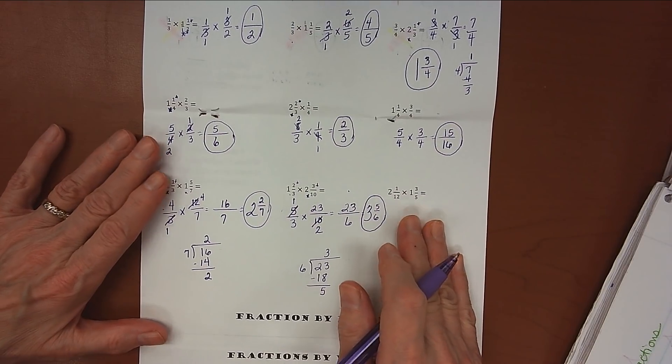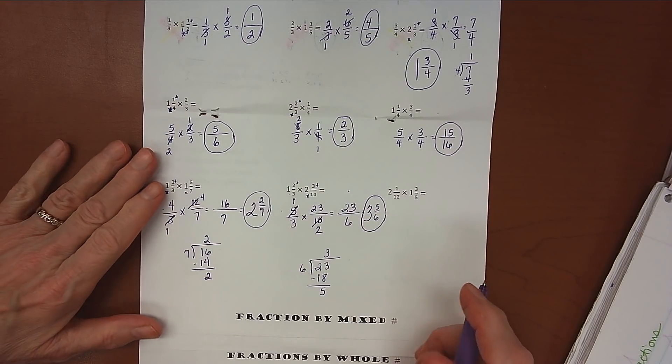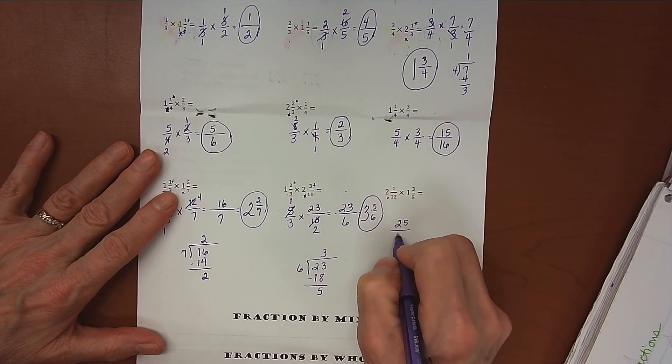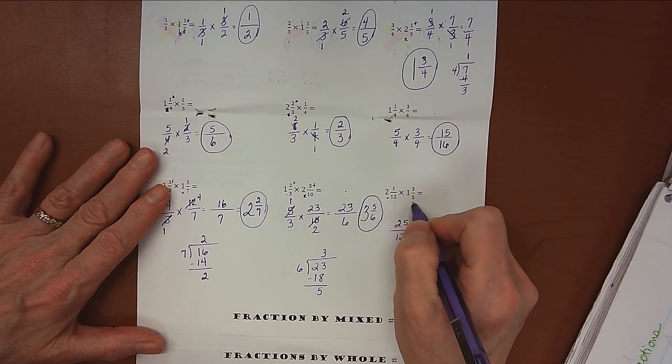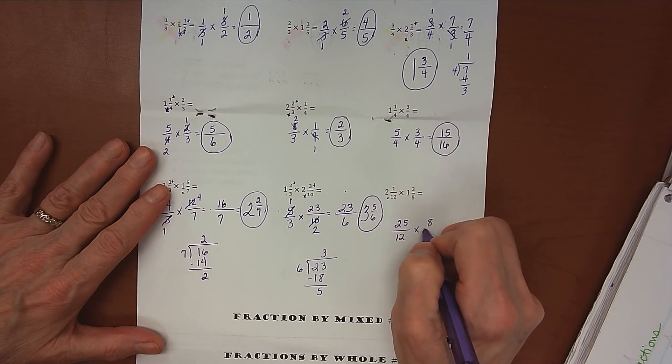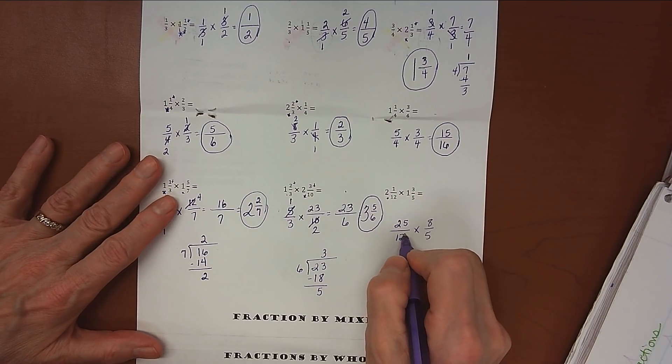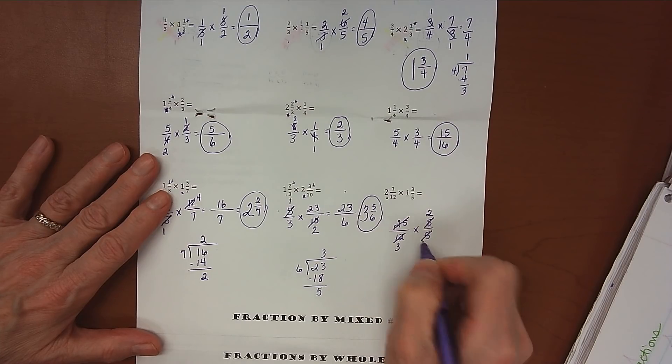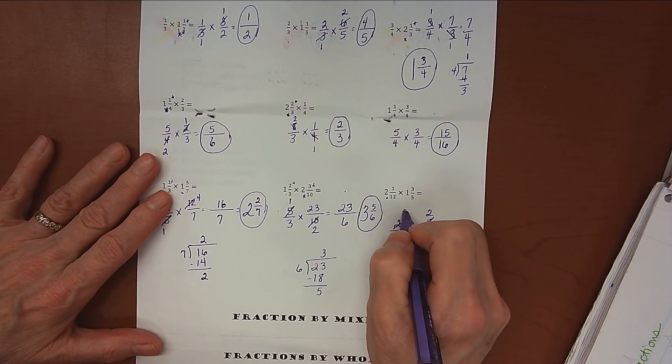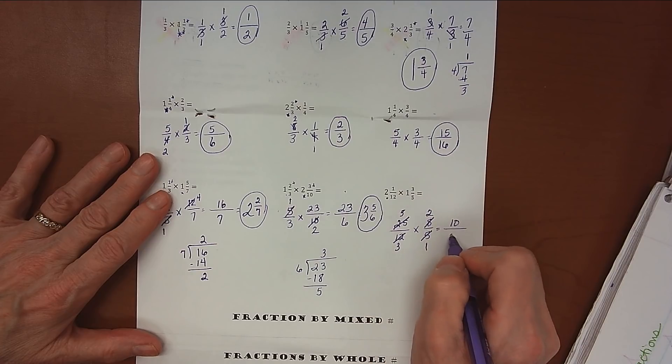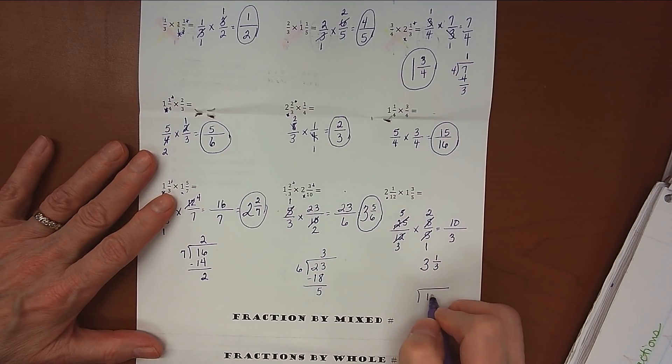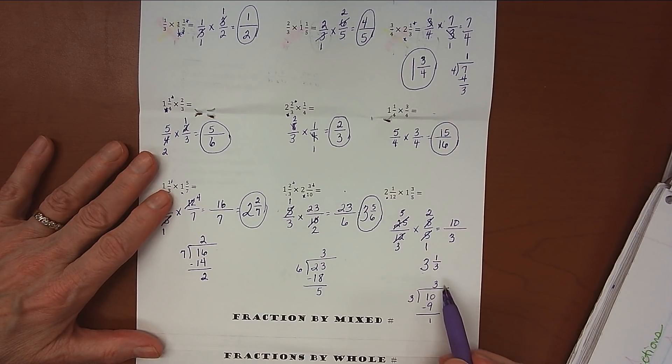Alright, why don't you try this very last one on your own? So stop your video, try this one, and then check back in and see how you did on that. Alright, so here we go. 12 times 2 is 24, plus 1 is 25 over 12. Did you change to the improper fraction correctly? 1 times 5 is 5, plus 3 is 8, 8/5. Places to cross-simplify. Both of these divide by 4, so 8 divided by 4 is 2, 12 divided by 4 is 3. Both of these divide by 5, so 5 divided by 5 is 1, 25 divided by 5 is 5. 5 times 2 is 10, 3 times 1 is 3. 3 divides into 10 three times with 1 left over. And that division would look like this: 10 divided by 3, 3 times 3 is 9, subtract my 9, there's my left over. So we've got 3 and 1/3.